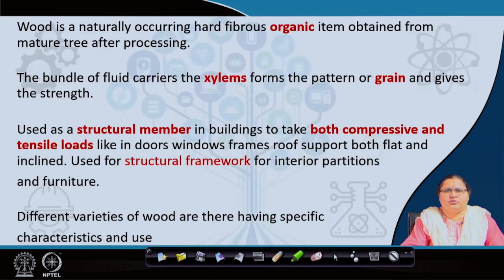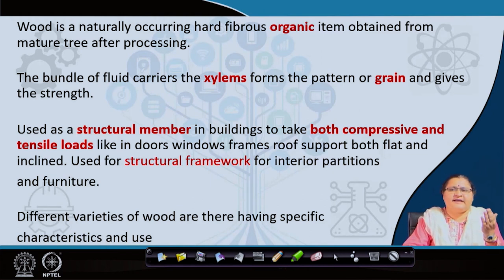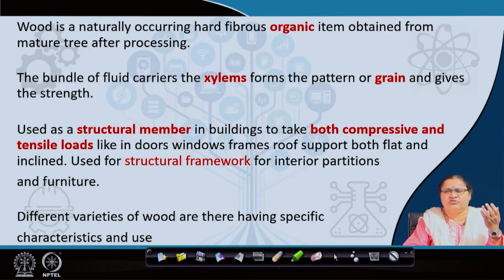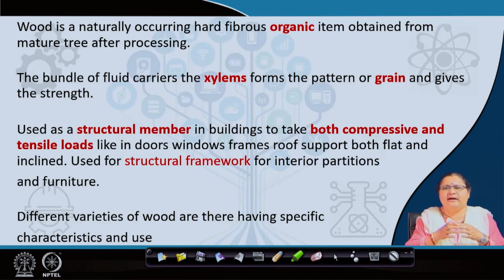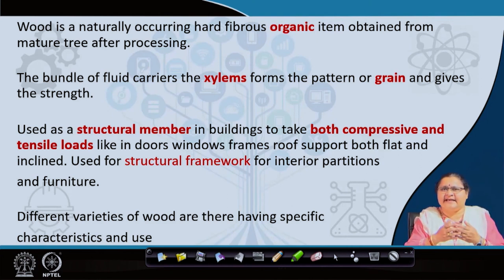What is wood? It is the hard fibrous organic item formed from the mature tree after being processed. There are lots of carriers of water bundles going from the root, transporting water and minerals to the leaves. These are called xylems. Xylems and phloems actually form the conducting system of a live tree. These fibers move together and form a bundle which also has strength, giving strength to the tree.